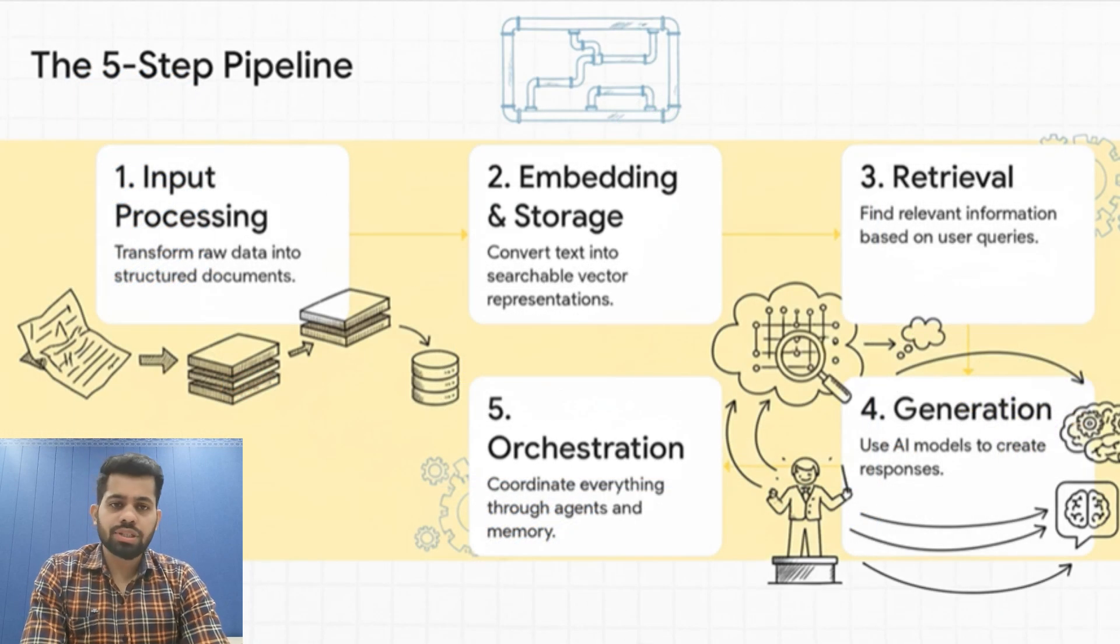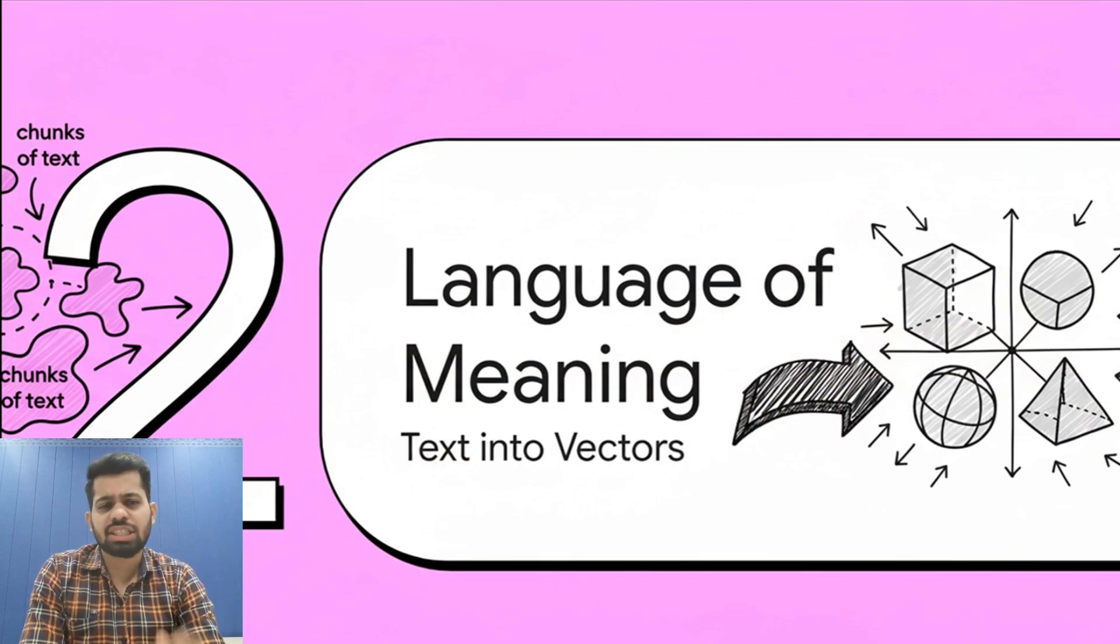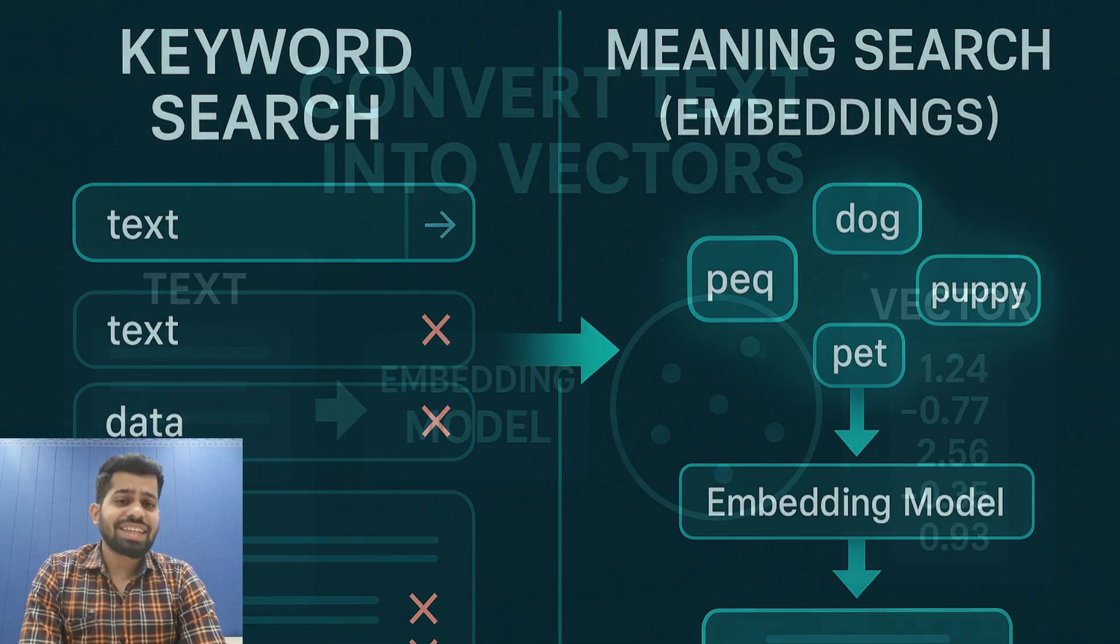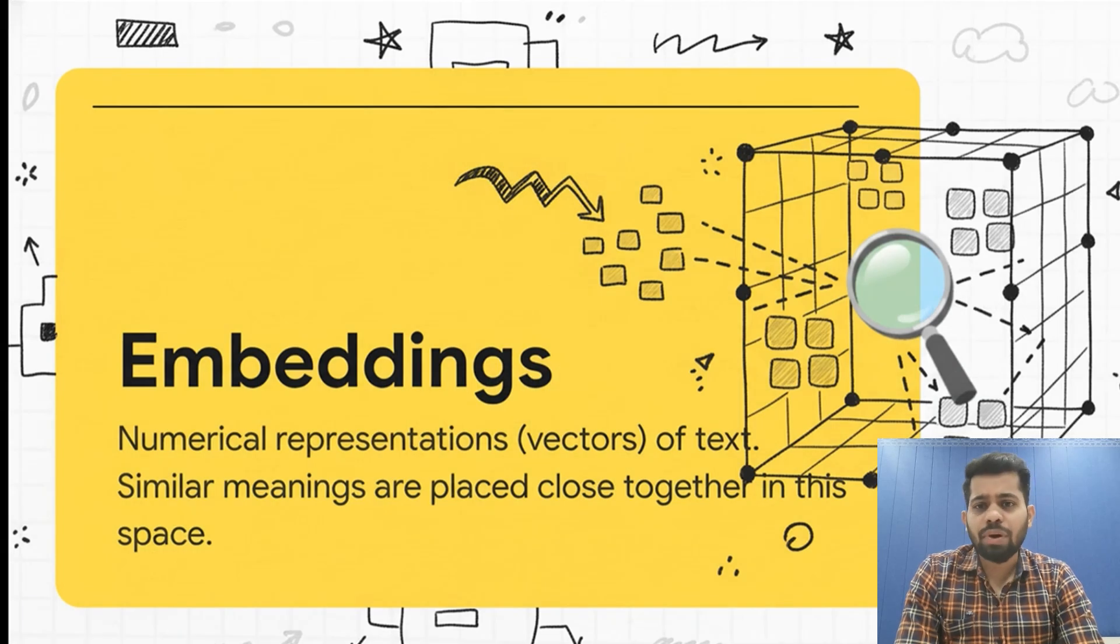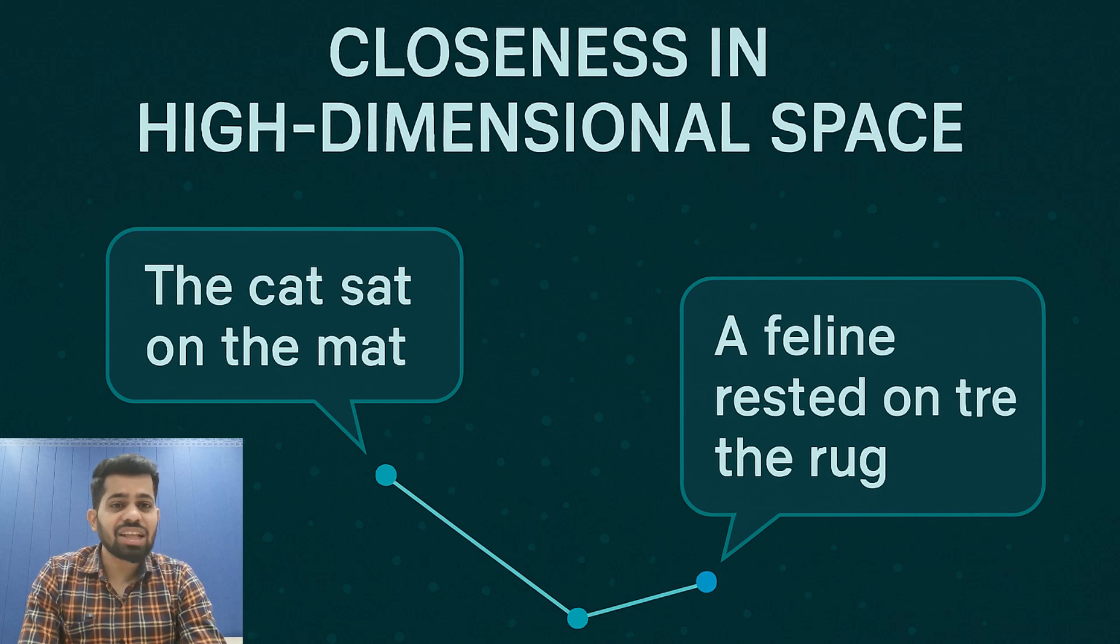Once we have our documents, we need to give the AI a way to understand their meaning efficiently. This brings us to the embedding and storage step. Here, a fundamental question first: How do you make a text searchable by its meaning, not just by keywords? The answer is embedding. Embedding models take text and convert it into vectors - that is, a list of numbers. You can think of them like numbers as coordinates in a multi-dimensional space, where similar meanings are close to each other. For example, dog and puppy would have vectors close together, but dog and car would be far apart.